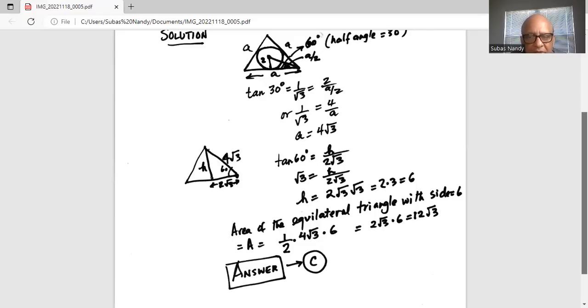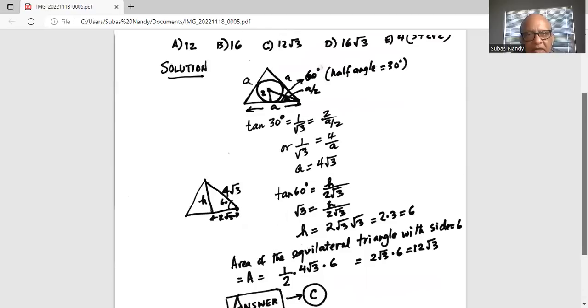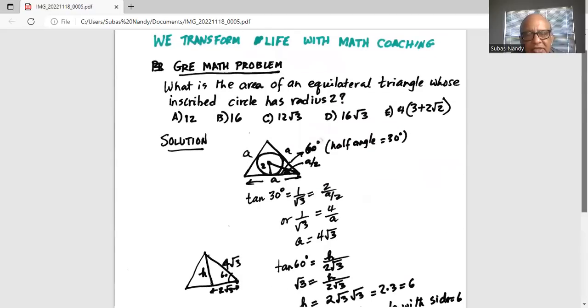Okay, so this becomes two cancels with four, two becomes two, two square root of three times six which is twelve square root of three. Hence the correct answer is alternative C.